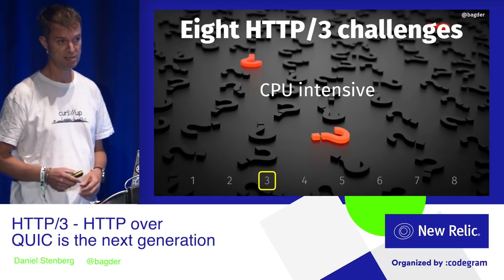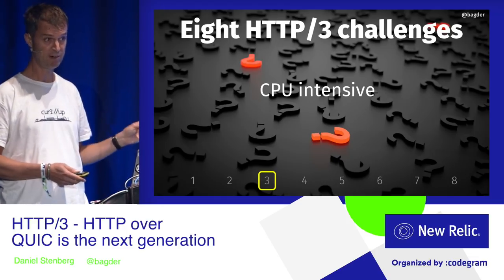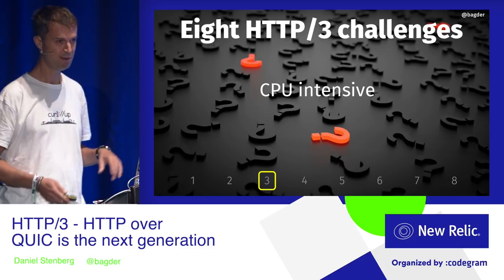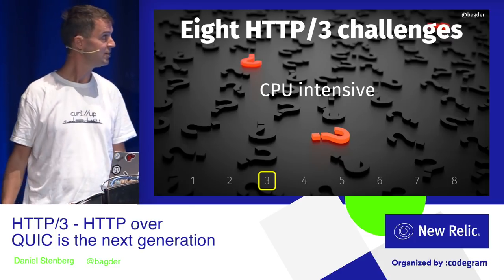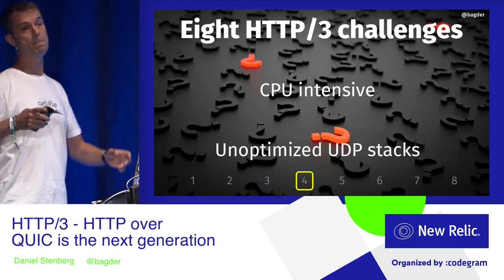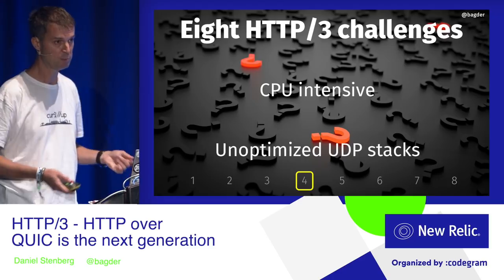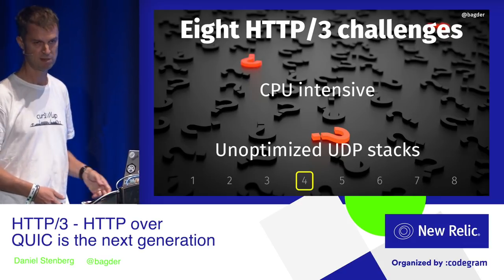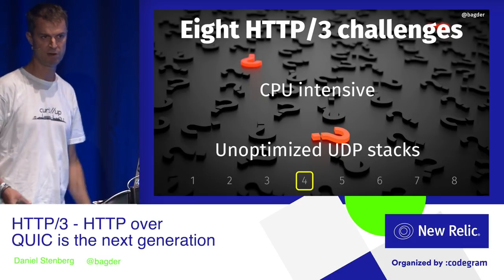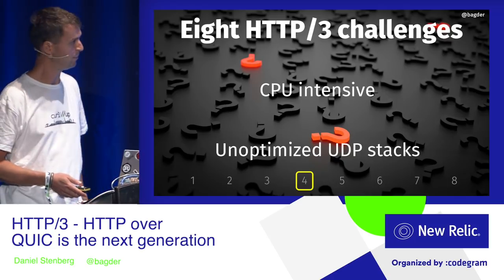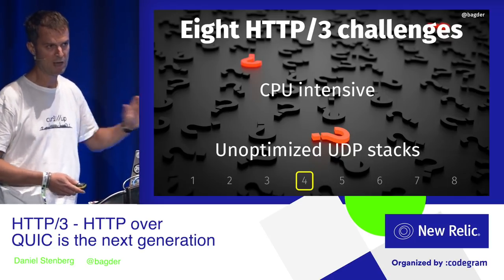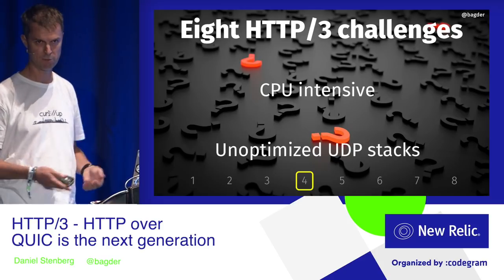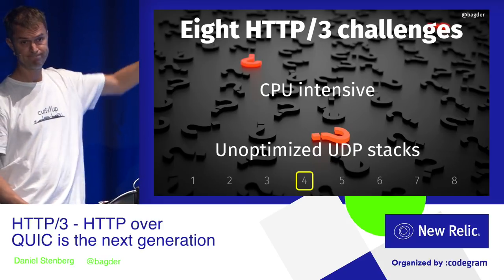Second challenge: it's very CPU intensive as it is right now. If you deploy this on your server, you can expect somewhere around two to three times the CPU usage for the same bandwidth. This is largely explained by very unoptimized UDP stacks — we've never tried to saturate many-gigabit pipes over UDP before at internet scale. We also need hardware offloading to do the crypto better in hardware. We have work to do.